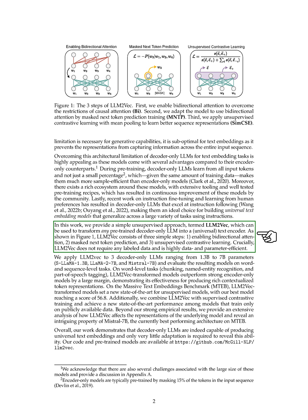In our work, we introduce a simple unsupervised method called LLM2-VEC to convert any pre-trained decoder-only model into a text encoder. LLM2-VEC involves three steps: enabling bi-directional attention, masked next-token prediction, and unsupervised contrastive learning. Importantly, LLM2-VEC does not need labeled data and is efficient in terms of data and parameters.